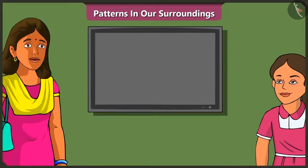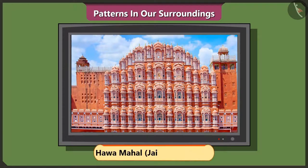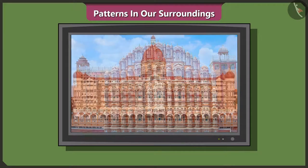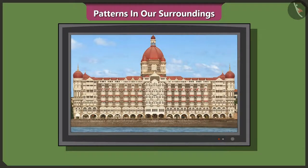Vinny, please turn on the TV. Hey, Mummy, is there a pattern on this building as well? Yes, this building is the Hawa Mahal at Jaipur in Rajasthan. And this is the Taj Hotel in Mumbai. Mummy, these patterns on these buildings make them look so beautiful, isn't it?